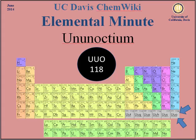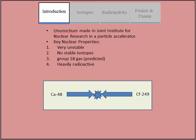Element 118, ununoctium, is a radioactive man-made element that resides within the halogen family.